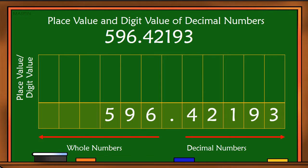Let's look at the place values first. Number 6, we have the ones. Number 9, we have tens. Number 5, we have hundreds.